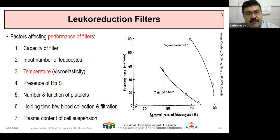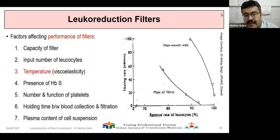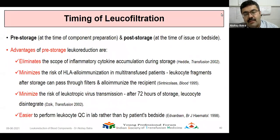The performance of leukoreduction filters is affected by many factors: capacity of the filter, input temperature, number of leukocytes, temperature (the most important factor), presence of hemoglobin S, number and function of platelets, holding time between blood collection and filtration, and plasma content of the cell suspension. It also depends on whether it is a non-movement type, the mass of the fibers, and efficiency — removal capability can be inversely proportional when using first- and second-generation filters, but third- and fourth-generation filters achieve better leukocyte removal without compromising pore size.